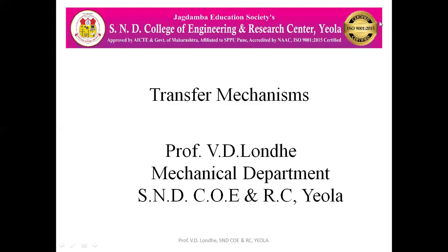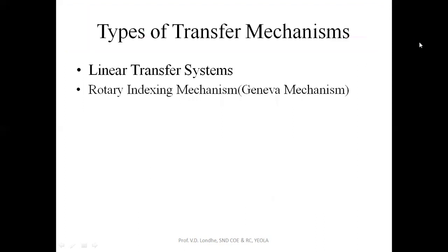Now we will see in detail the types of transfer mechanism. There are two types: one is the linear transfer system, and another is the rotary indexing mechanism. For the rotary indexing mechanism, we use a specific mechanism called the Geneva mechanism. This mechanism was developed in Geneva, a city in Germany, and so it is called the Geneva mechanism.